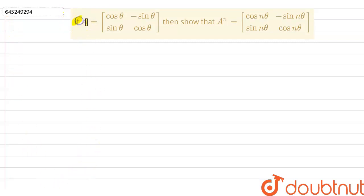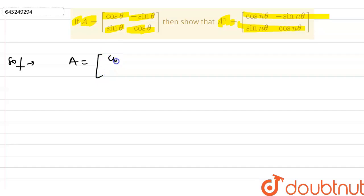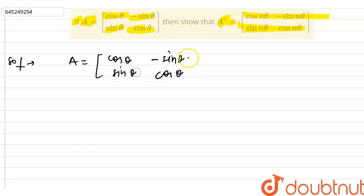Hello everyone. Here we have a question: if a given matrix A is given by cos θ, -sin θ, sin θ, cos θ, then show that A raised to the power n equals the corresponding matrix. I'm going to solve this. A equals the matrix: cos θ, -sin θ, sin θ, cos θ.